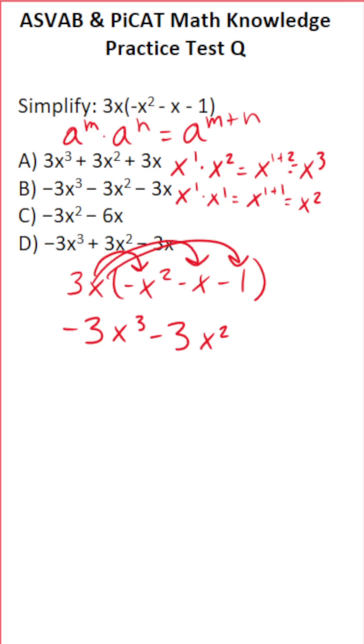Anything times 1 is itself. 3x times negative 1 is negative 3x. So just like that, we multiplied this out using the distributive property, and we can see that the correct answer choice is B.